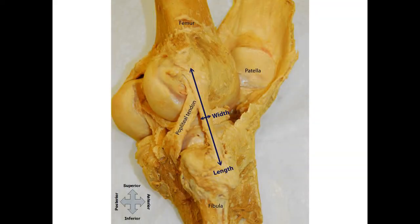Seventy knees from formal and fixed adult cadavers with a mean age at death of 77 years were dissected, and a digital caliper used to measure Fibular Collateral Ligament length, width, distance from proximal attachment to articular surface, and distance from distal attachment to articular surface.